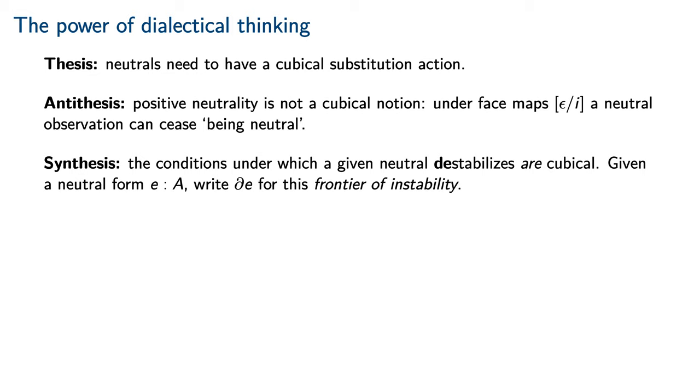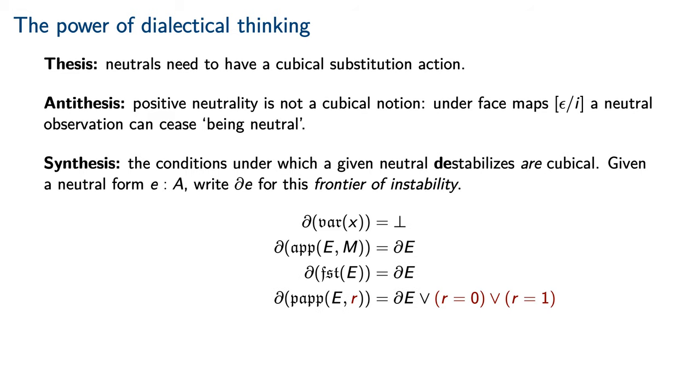we notice that the conditions under which a given neutral destabilizes are cubical. In particular, we may identify for any neutral form E a frontier of instability, or a condition under which it destabilizes. Variables are completely stable, hence their frontier of instability is empty. Ordinary elimination forms like application and first projection simply preserve the frontier of instability of their neutral arguments. Something new, however, occurs with path application. In addition to retaining the frontier of instability of the neutral argument, we glue onto it the boundary of the dimension to which it is being applied.